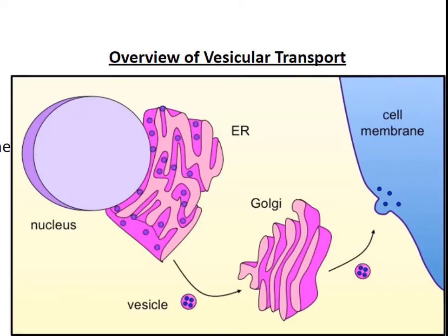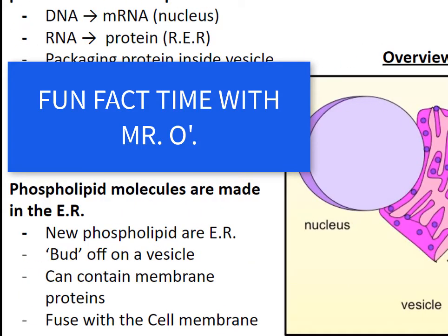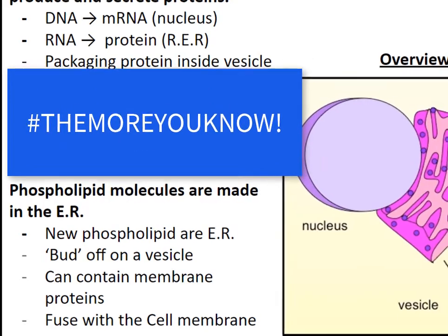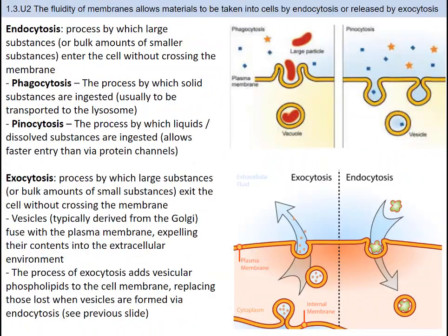The protein will be packaged into a transport vesicle and transported to the Golgi, where it will be modified and sent via transport vesicle to its final destination. If the final destination is outside the cell, the protein will be put into a secretory vesicle, that vesicle will merge with the cell membrane, and the protein will be secreted. New phospholipid molecules are made in the endoplasmic reticulum, then they bud off on a secretory vesicle to the cell membrane, where they incorporate and replace older molecules. Fluidity refers to the viscous flow of phospholipids in the cell membrane and organelles of the endomembrane system, and can be affected by temperature, fatty acid length, fatty acid saturation, and presence of cholesterol.